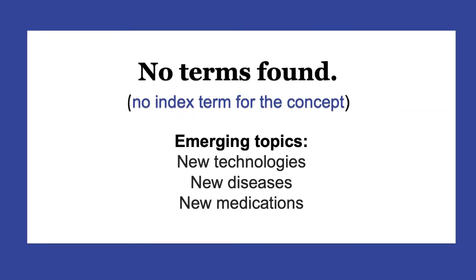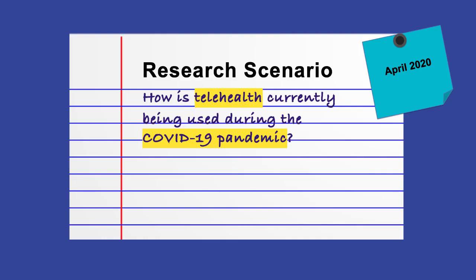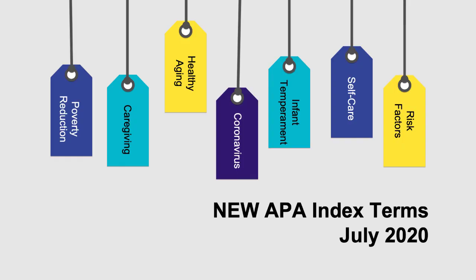In addition to terms that are out of the database's scope, emerging topics may not have corresponding index terms as yet. APA updates the terms in the Thesaurus every few years, so until there are enough articles to warrant a new index term, there might not be one for your concept. For example, if this were April 2020 and we wanted to focus our search on the use of telemedicine during the coronavirus pandemic, we wouldn't be able to find an index term for our COVID-19 concept because the disease was too new. In July 2020, APA added this concept as an index term along with 101 others related to pandemics, social issues, preventative health, and more.